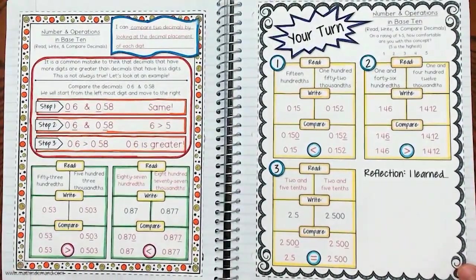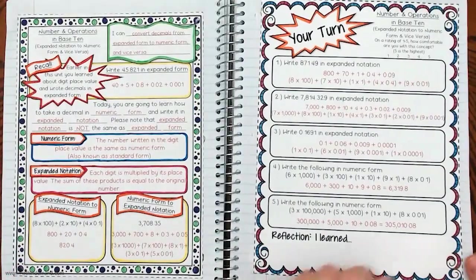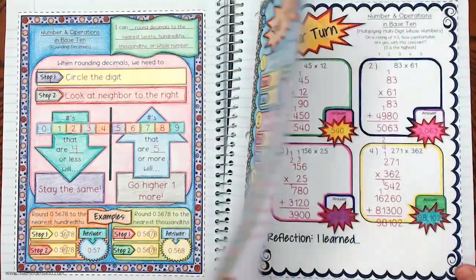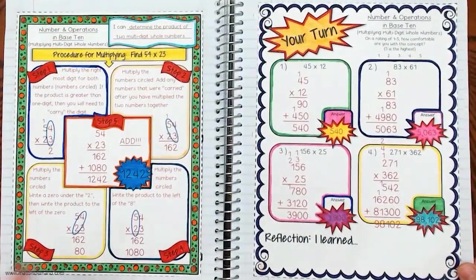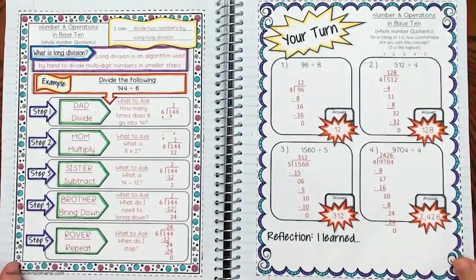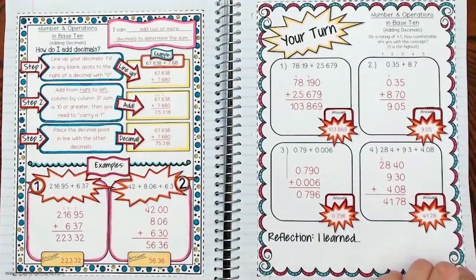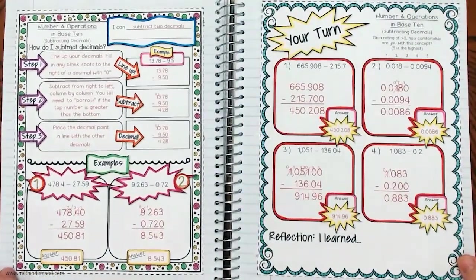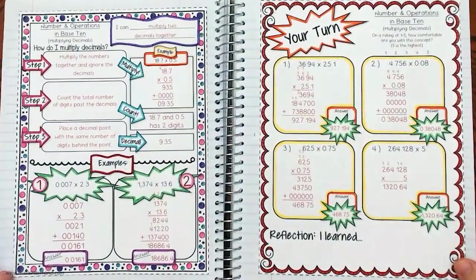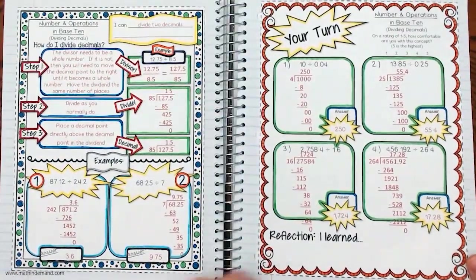Students will read, write, and compare decimals, work with expanded notation to numeric form and vice versa, rounding decimals, multiplying multi-digit whole numbers, whole number quotients, adding decimals, subtracting decimals, multiplying decimals, and dividing decimals.